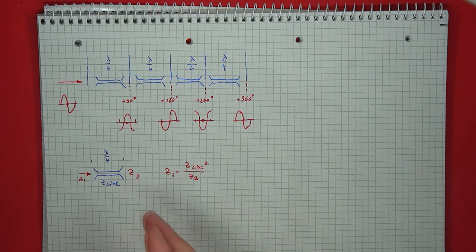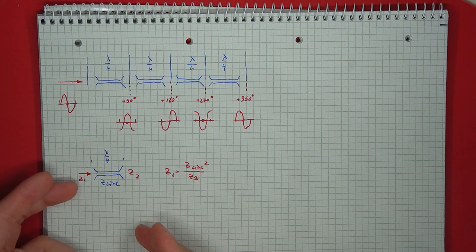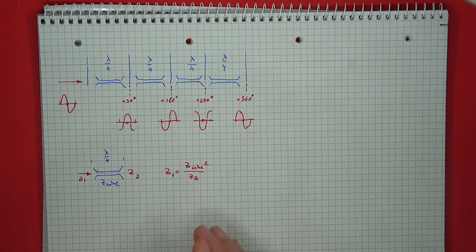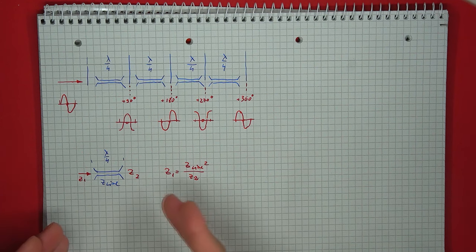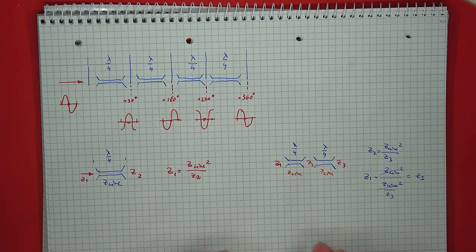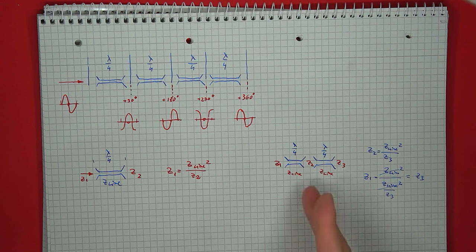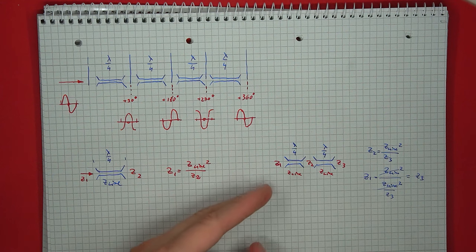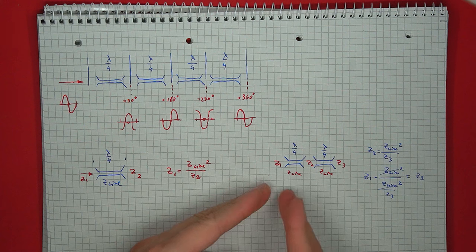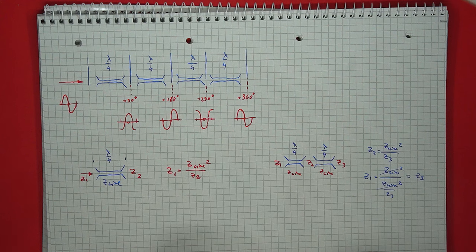The second important property is the impedance transformation presented by a quarter wavelength line. The impedance seen from one end is the line's impedance squared divided by the load impedance. This works really nicely with resistive loads — if you have the right line impedance, you can turn any load impedance into any other impedance. This property can be taken one step further when the line is a half wavelength long, where you get a double inversion, and the impedance at the beginning works out to be exactly the impedance at the end.